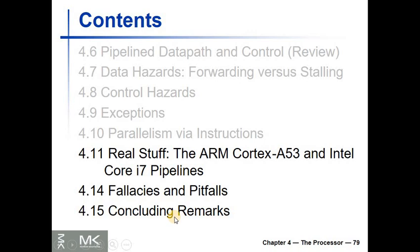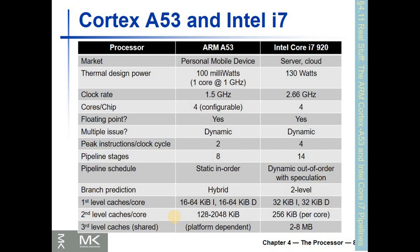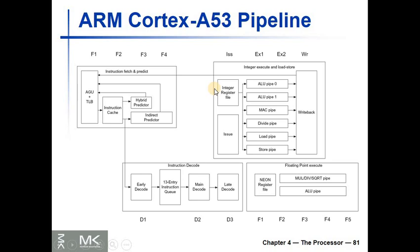Good evening. In this recording I'll continue explaining section 4.11, which gives examples of two modern processors: the ARM A53, which is an example processor used in personal mobile devices, and the Intel Core i7 model 920, which is an example modern processor used in desktop, server, and cloud computing. I've explained the A53 pipeline in detail.